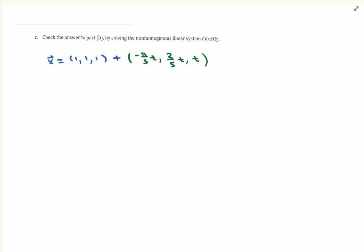Part C states that you want to check the answer to Part B by solving the non-homogeneous linear system directly. What I have up here is a recall of what that general solution looked like. From Part B, we took the specific solution given in the instructions and added the general solution of the homogeneous linear system.